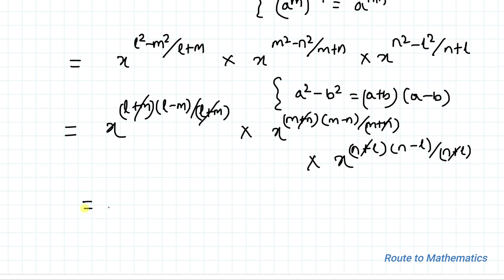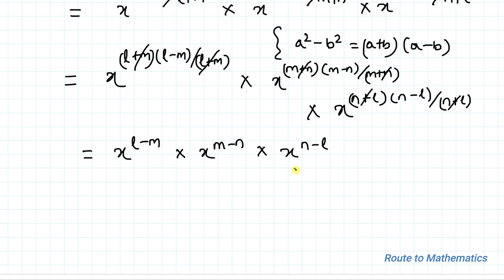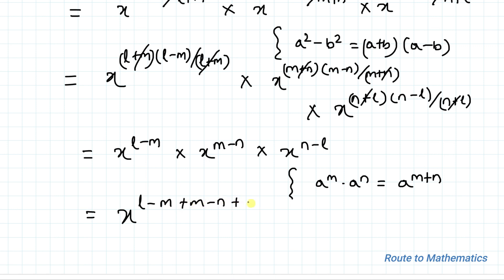So we have x to the power (l minus m), multiplied with x to the power (m minus n), multiplied with x to the power (n minus l). All bases are the same, so we apply the exponential product rule: a to the power m multiplied with a to the power n equals a to the power (m+n). This gives x to the power (l minus m plus m minus n plus n minus l). Here plus l and minus l cancel, minus m and plus m cancel, and minus n and plus n cancel, giving us x to the power 0, which equals 1. That is our answer.